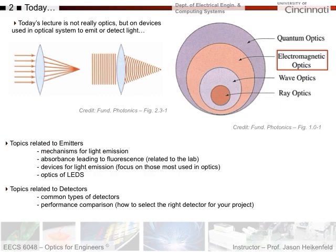Topics related to emitters: we'll talk about the mechanisms for light emission, absorbance leading to fluorescence, devices that emit light, and the optics of LEDs. For detectors, we'll focus mainly on the types of detectors and do a little performance comparison, so in the future, if you need a detector, you can figure out how to select the right one for your project.